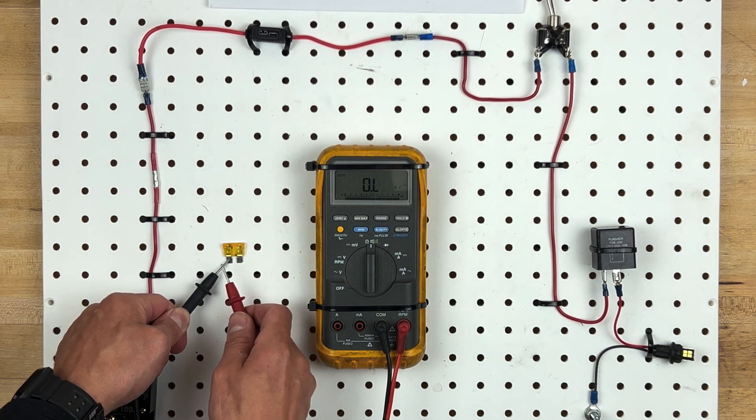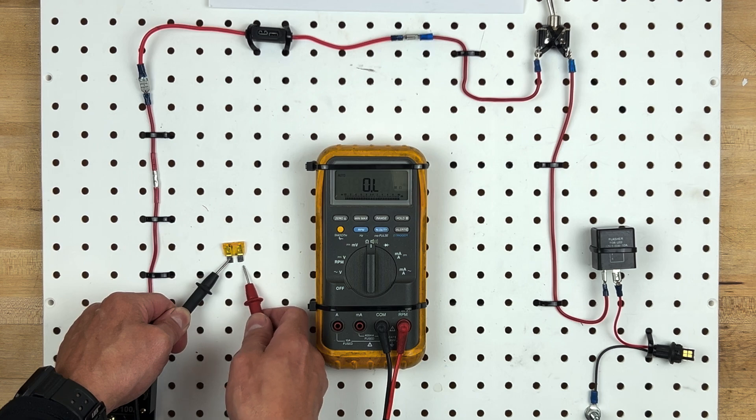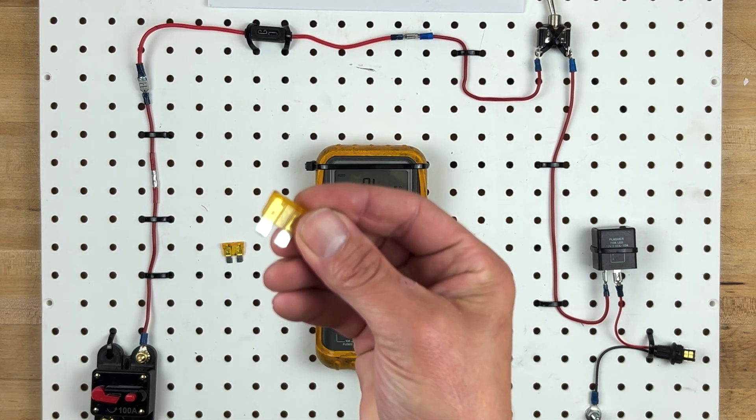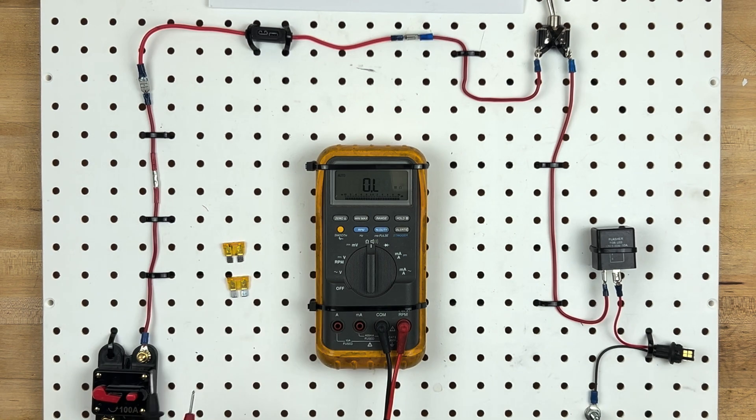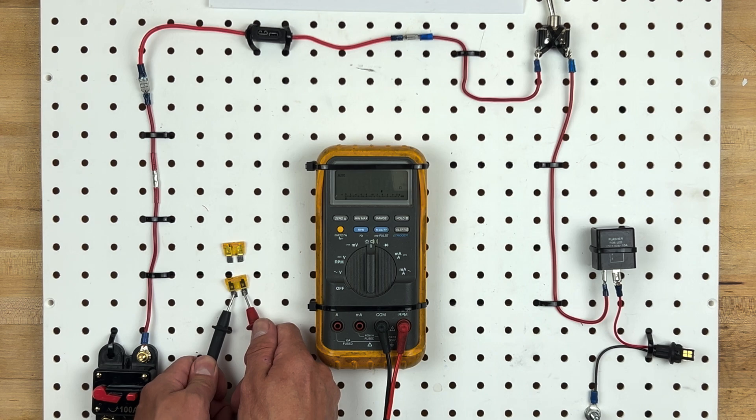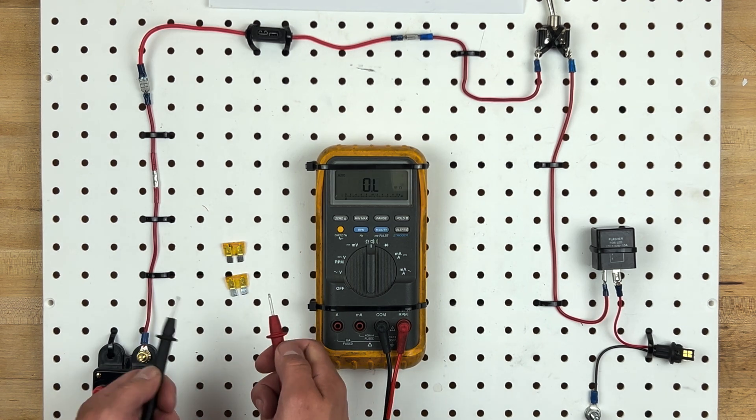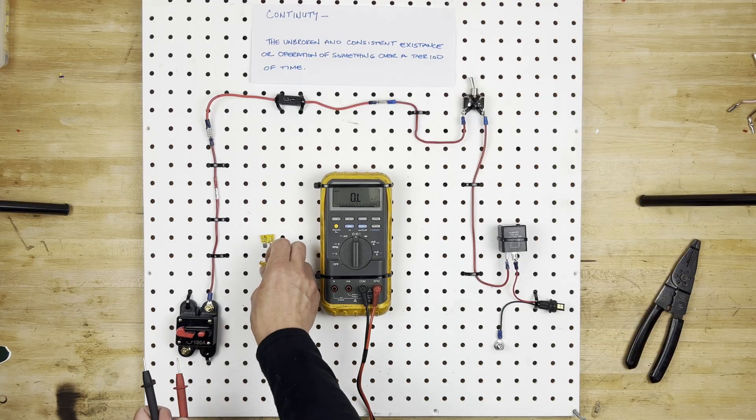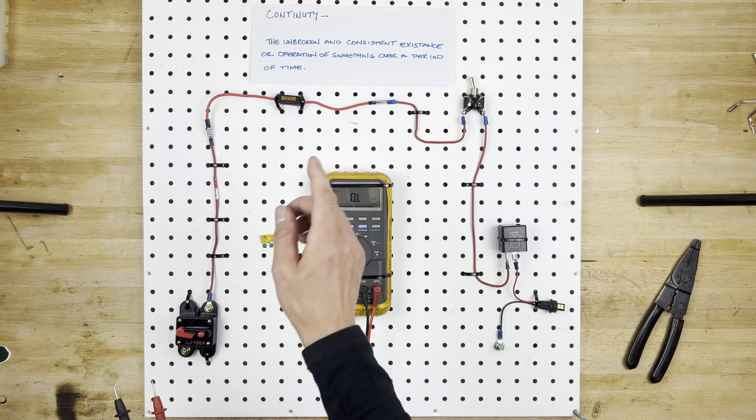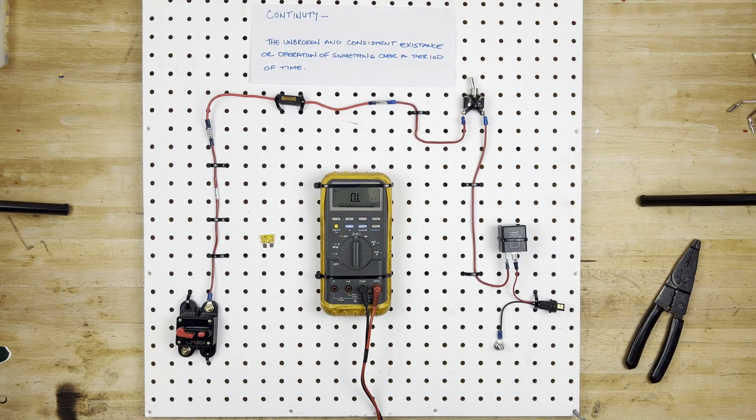So there is no continuity from one side of the fuse to the other, and that means the fuse is no good. Let's compare it to a good fuse. Obviously no burn marks, making sure it's the same size that you took out, and you can see this one does have continuity. And that means the fuse is good, which means we can pop it into here, and we'll check for continuity again to make sure it's working.